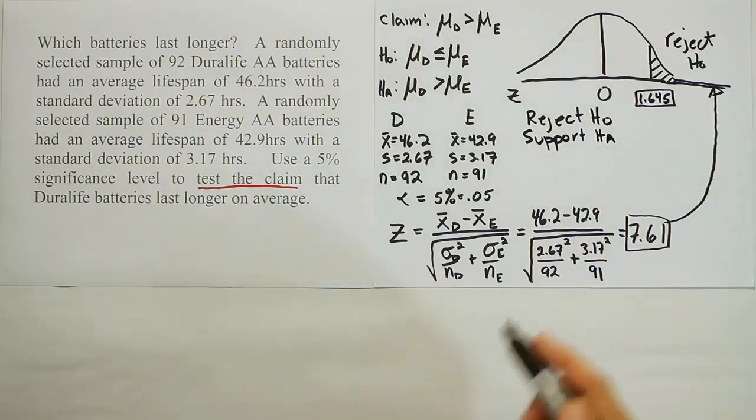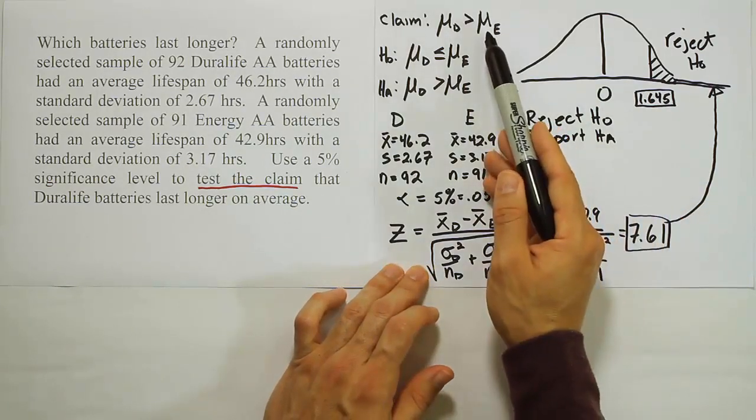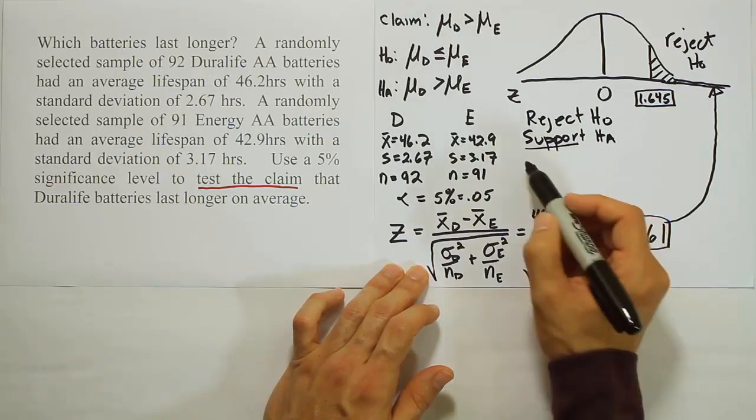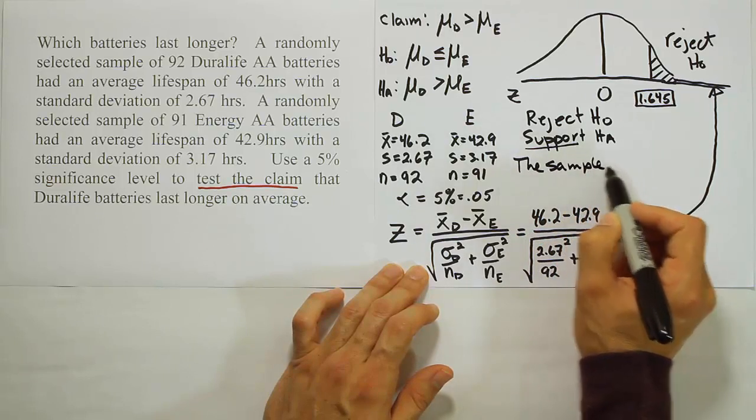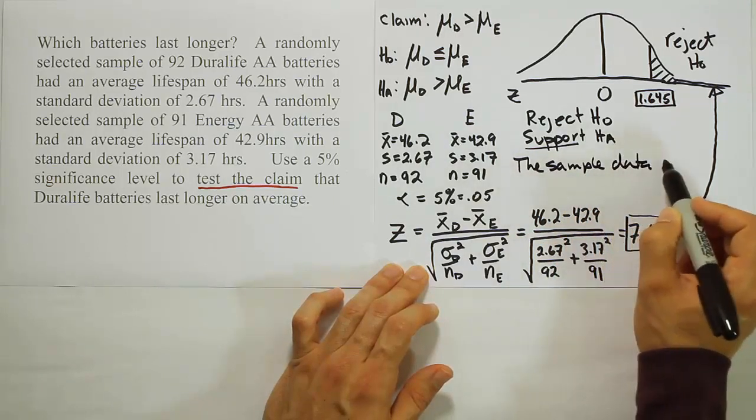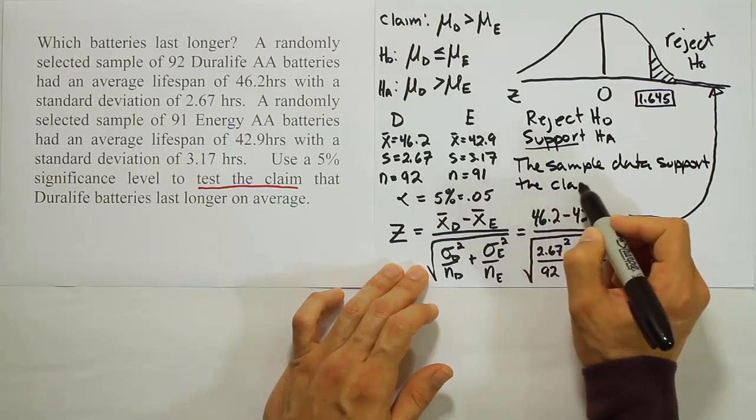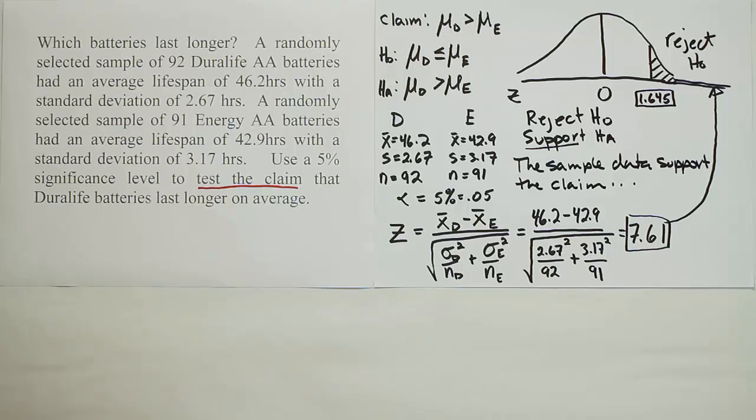Now let's go back to our claim and say, which one is it? Is our claim H0 or is it HA? When you look at the claim, you can see that the claim is HA. So we're going to say that we support the claim. So the sample data support the claim. The claim that, of course, Duralife batteries outlast the energy batteries.